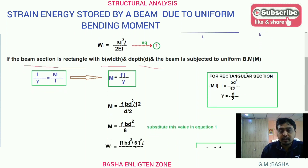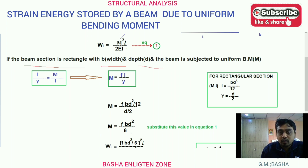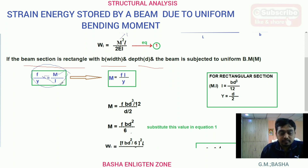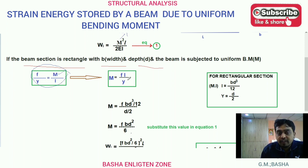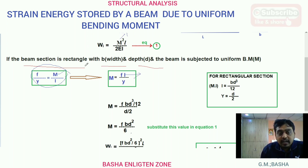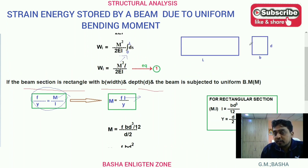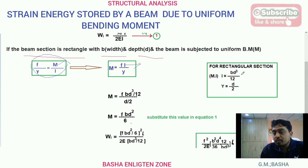Moving to the next step: if the beam section is a rectangle, we use the bending relation M by I equal to f by y. We want the M value. From this relation, M equals f times I divided by y. This I is the moment of inertia. For a rectangle, the moment of inertia about its centroidal axis equals bd cubed by 12. So I equals bd cubed by 12. The neutral axis is exactly at the center, so y equals d by 2 — at distance d by 2 from top and d by 2 from bottom.